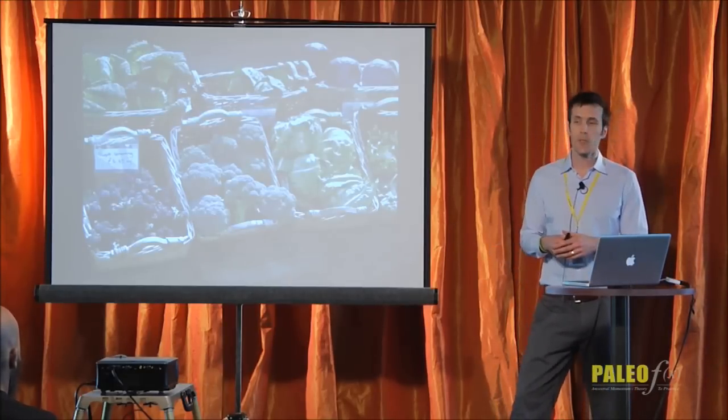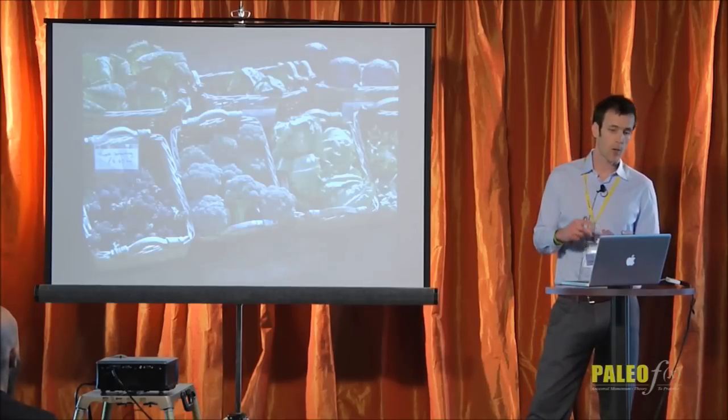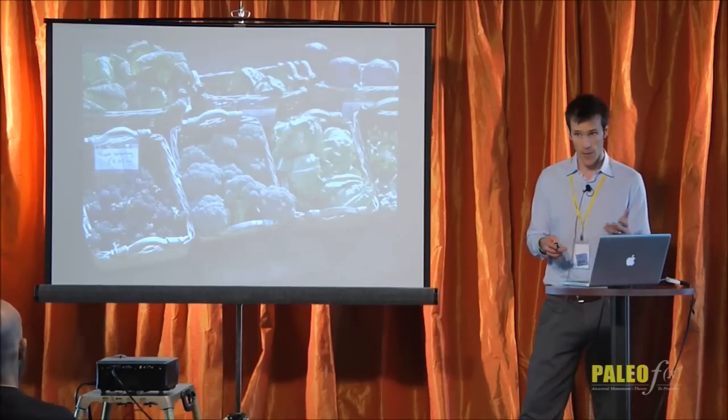The most common goitrogens are cruciferous vegetables like broccoli, Brussels sprouts, cauliflower, cabbage, collard greens, etc.